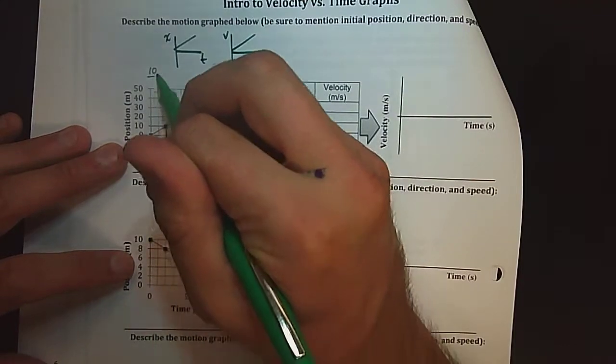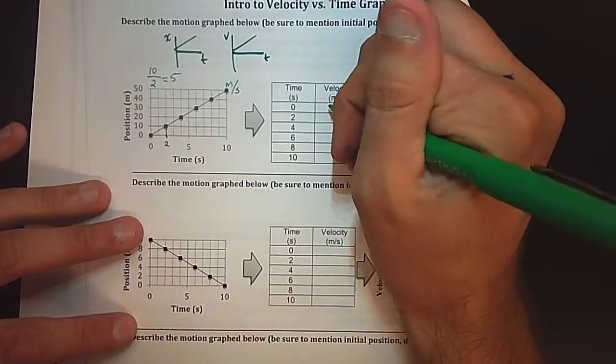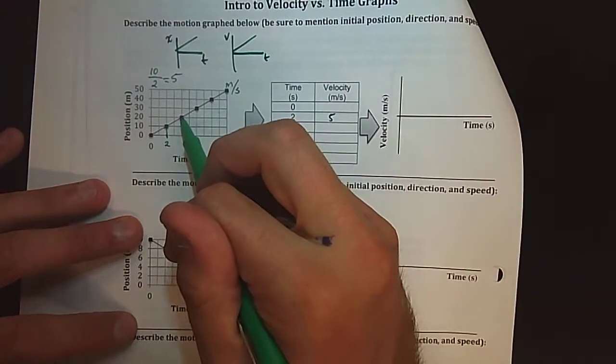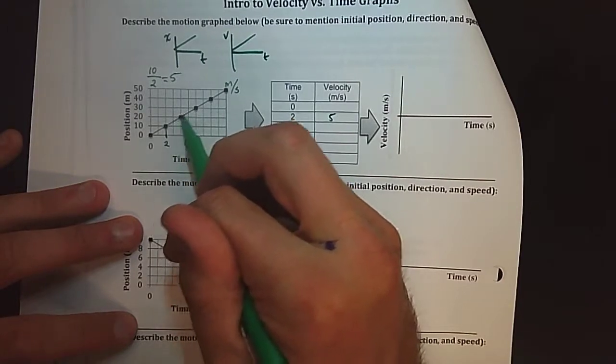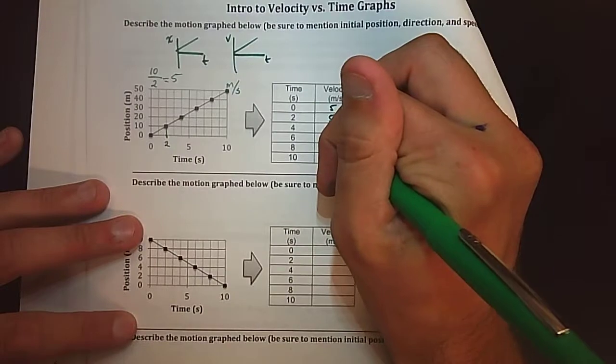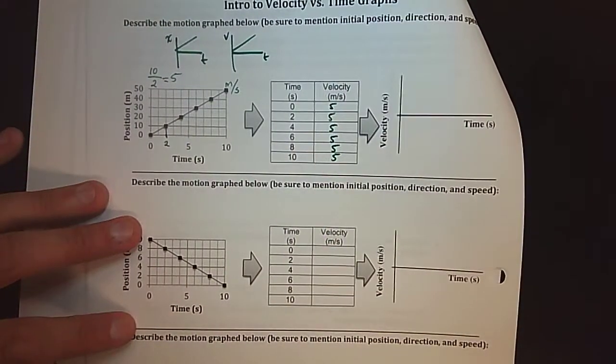So my slope is five, specifically it's five meters per second. Now if I go to the next data point it looks like the slope is the exact same at this point, at this point, everywhere. So my velocity at every single point is constant, it's five meters per second.